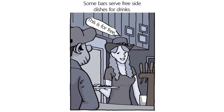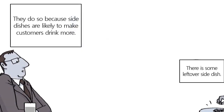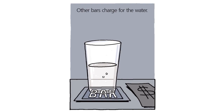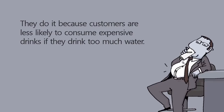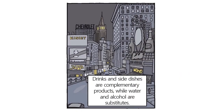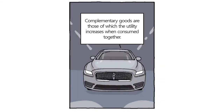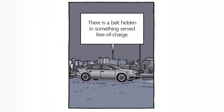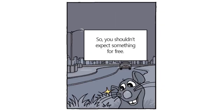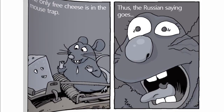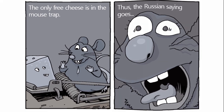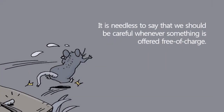Some bars serve free side dishes with drinks because side dishes are likely to make customers drink more. Other bars charge for water because customers are less likely to consume expensive drinks if they drink too much water. Drinks and side dishes are complementary products, while water and alcohol are substitutes. Complementary goods are those whose utility increases when consumed together. There is always a bait hidden in something served free of charge, so you shouldn't expect something for nothing. As the Russian saying goes: the only free cheese is in the mousetrap. We should be careful whenever something is offered free of charge.